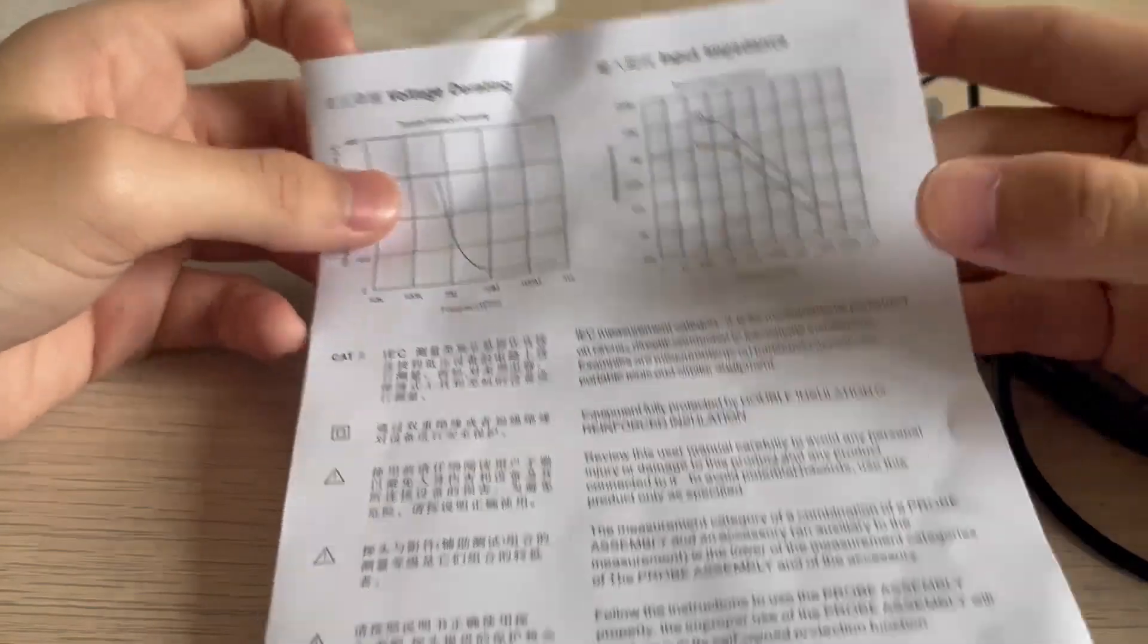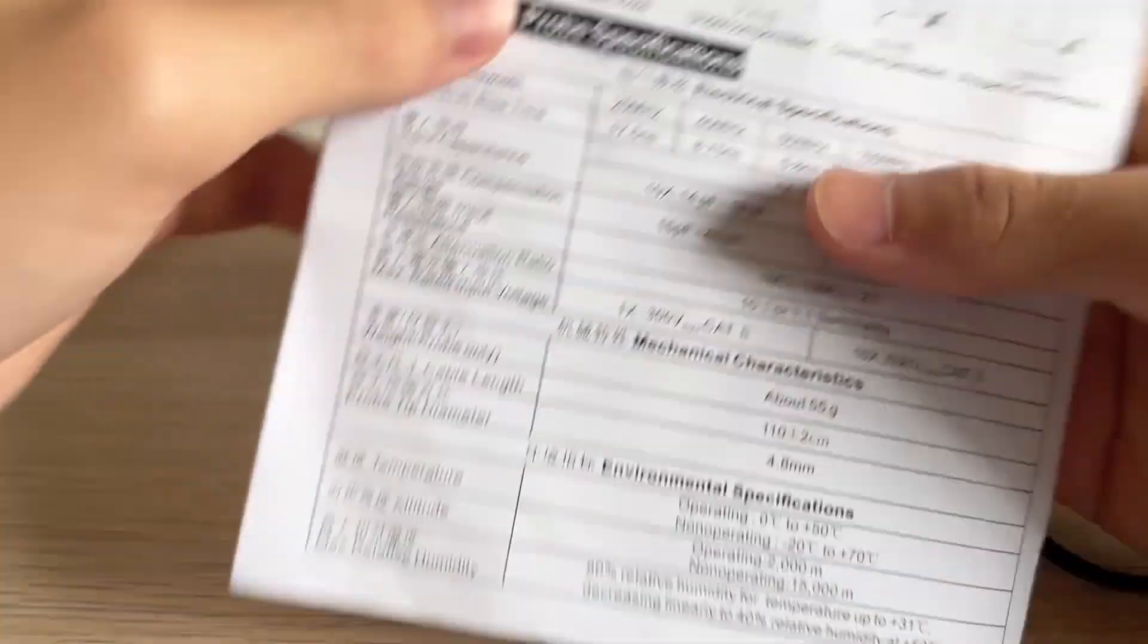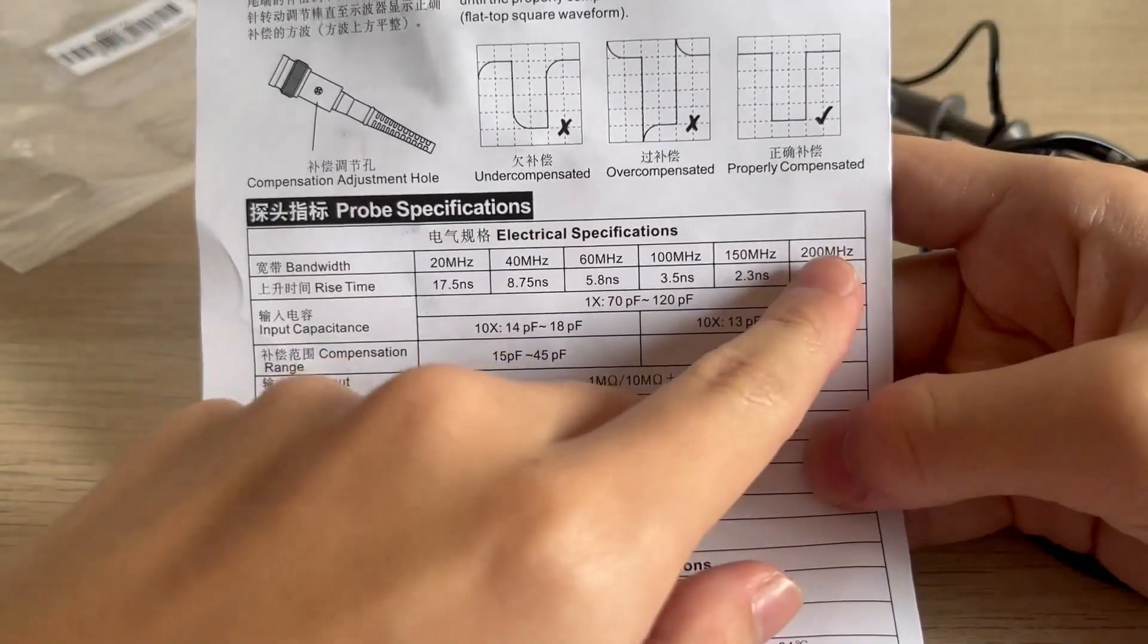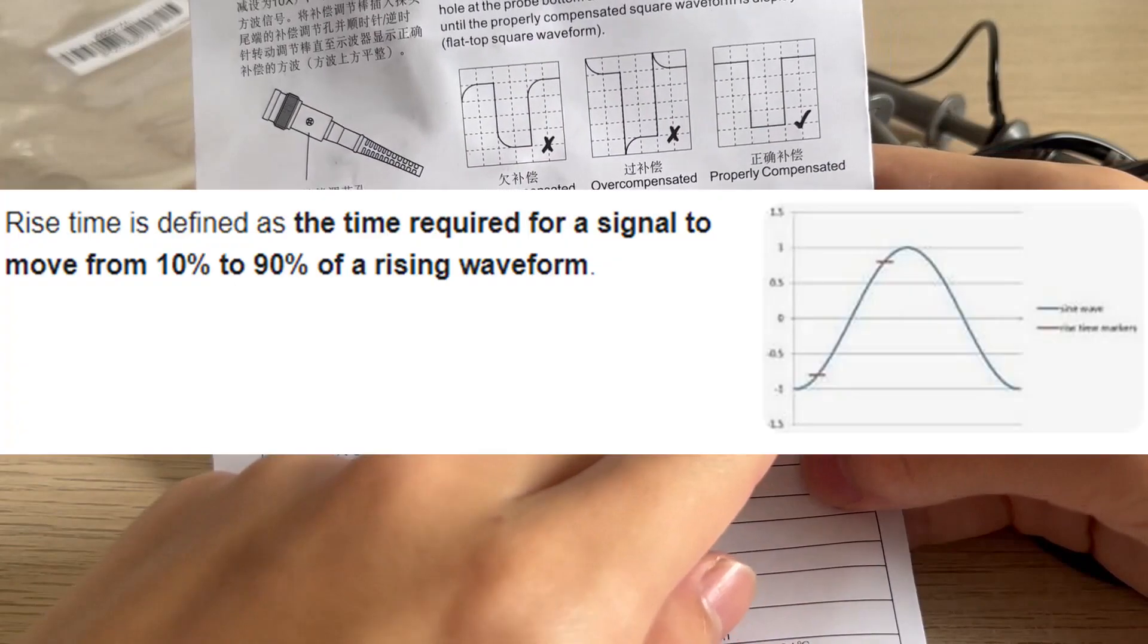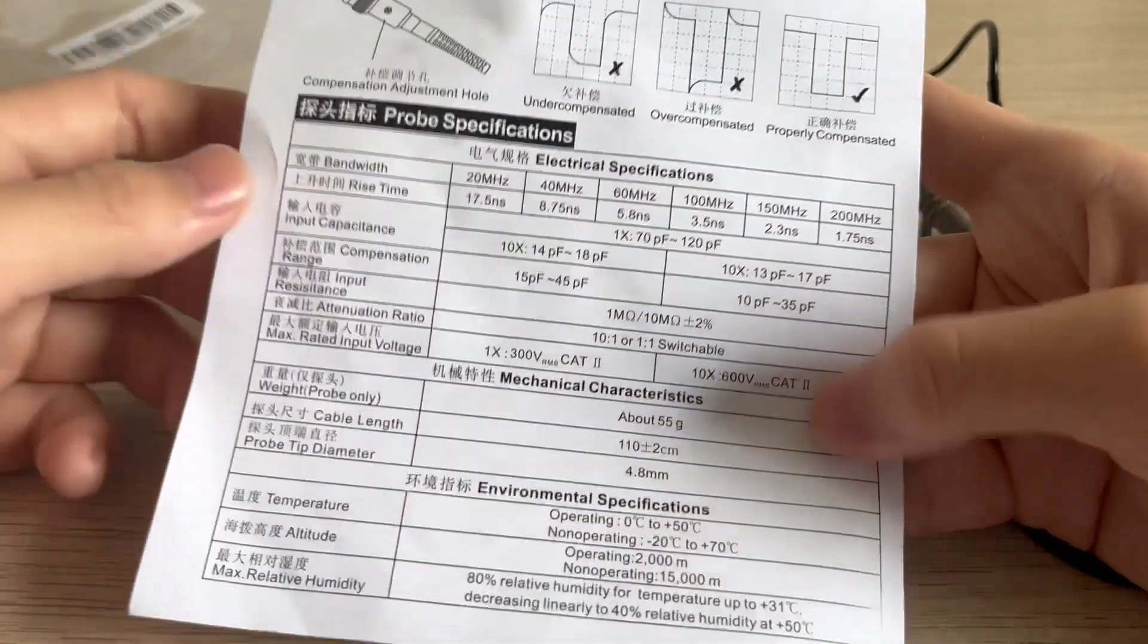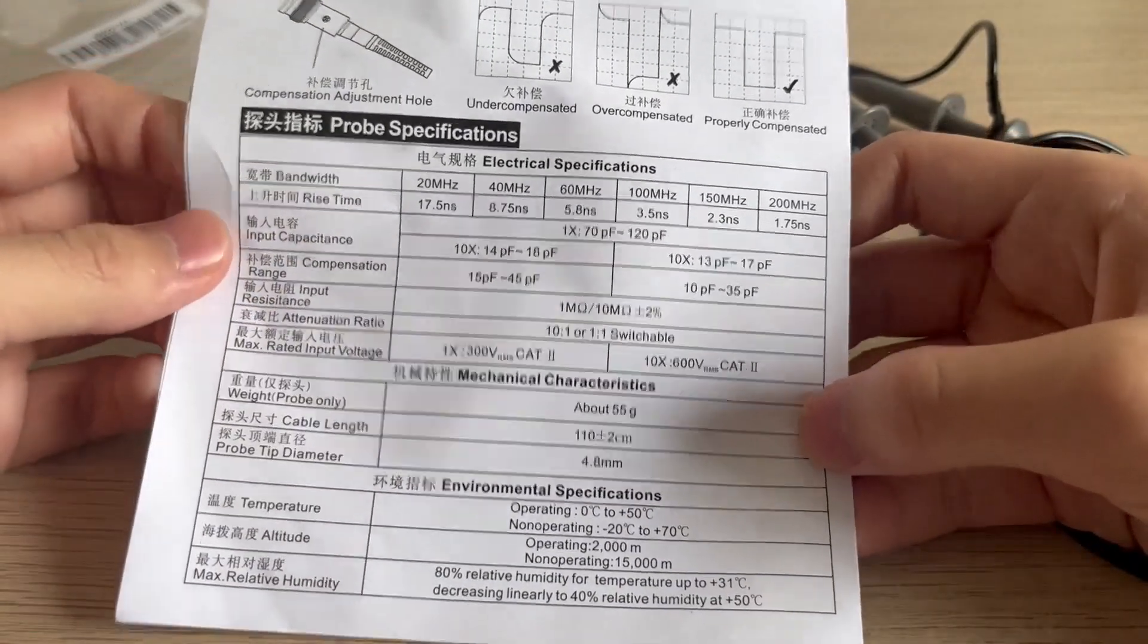It has even some graphs, voltage derating and input impedance. The bandwidth can go up to 200 MHz with a rise time of 1.75 nanoseconds which is quite cool. You can pause the video to take a look at the instructions for more details.